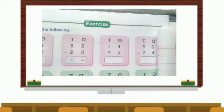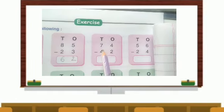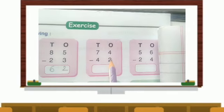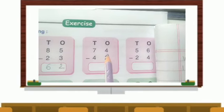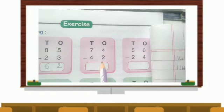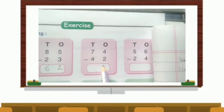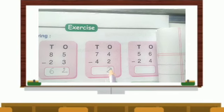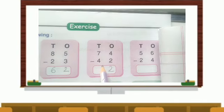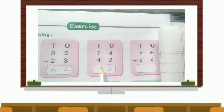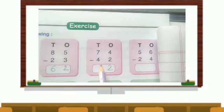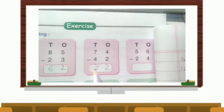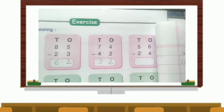Next, 74 minus 42. We will take numbers under the ones house. So 4 minus 2. 4 minus 2 is 2. 7 minus 4. You can do it by backward counting or draw sticks. Your answer is 3.